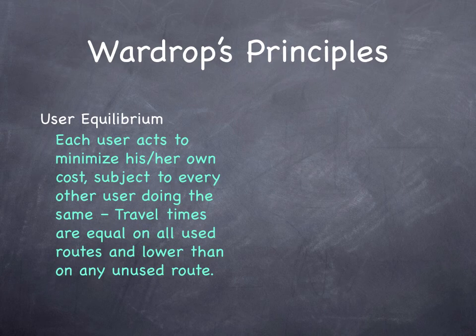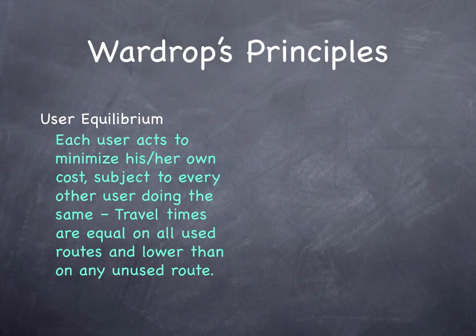In the user equilibrium principle, he says each user acts to minimize his or her own cost, subject to every other user doing the same thing. Travel times are equal on all used routes and lower than on any unused route. In other words, each driver takes the shortest path, subject to everybody else taking the shortest path. If there's a path between an origin and destination that takes longer than the shortest path, no one uses it.